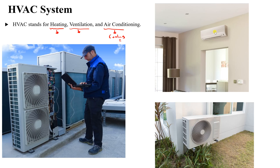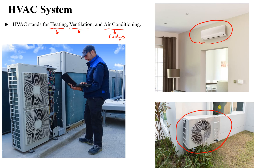One common type of air conditioning system is the split unit, which we will see in the next lesson when we talk about types of HVAC systems. It is called a split unit because the system is split into two parts — an indoor unit and an outdoor unit.